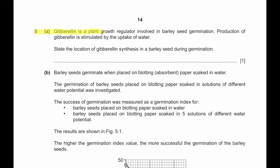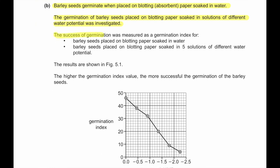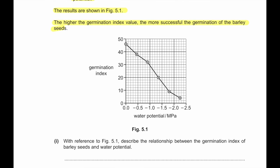Question number 5a. Gibberellin is a plant growth regulator involved in barley seed germination. Production of gibberellin is stimulated by the uptake of water. State the location of gibberellin synthesis in a barley seed during germination. Gibberellin is produced in the embryo. Part B. Barley seeds germinate when placed on blotting absorbent paper that is soaked in water. The germination of barley seeds placed on blotting paper soaked in solutions of different water potential was investigated. The success of germination was measured as germination index. The results are shown in figure 5.1. The higher the germination index value, the more successful germination of the barley seed. We can see as the water potential becomes lower, the rate of germination index also becomes lower.